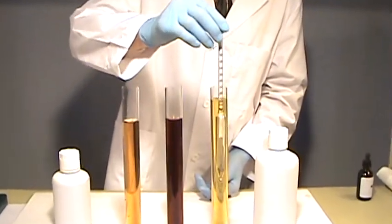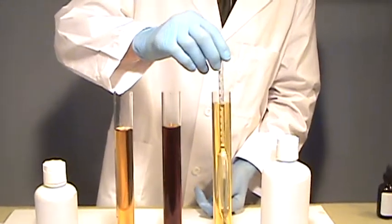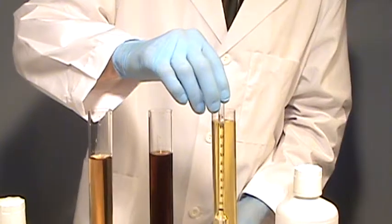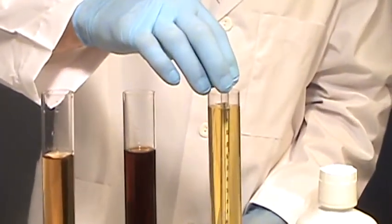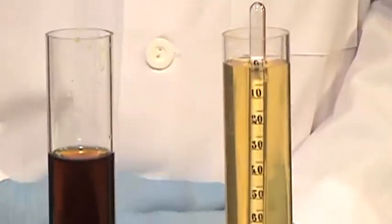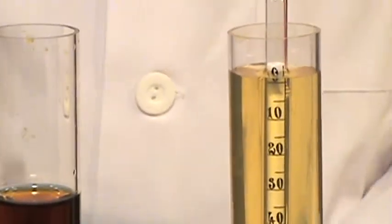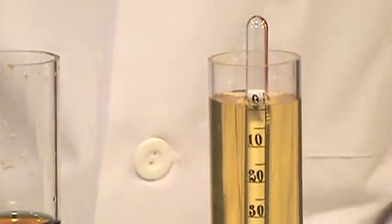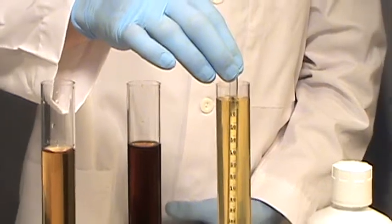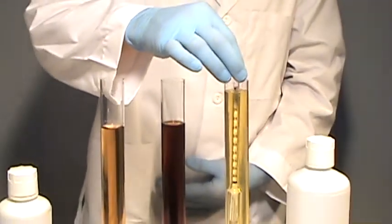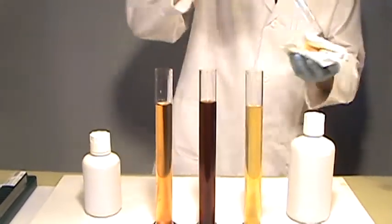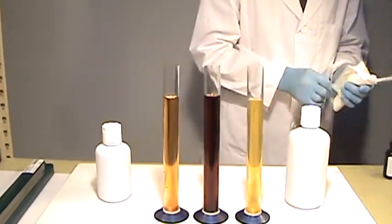The higher the hydrometer floats, the more mineral content. The lower it floats, the less mineral content. As you can see, that floats at about a one. This indicates that there are practically no minerals dissolved or dispersed in this liquid. Very low mineral content.